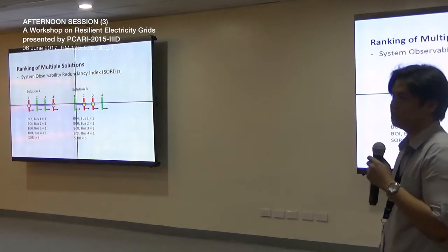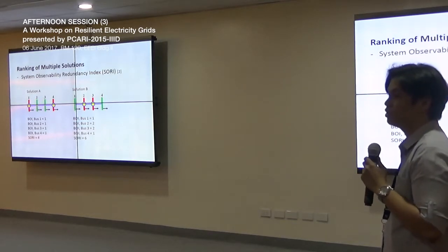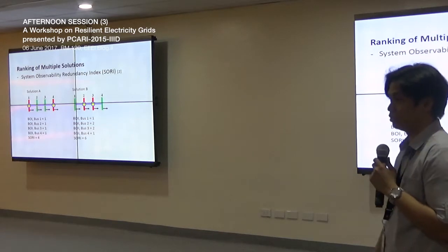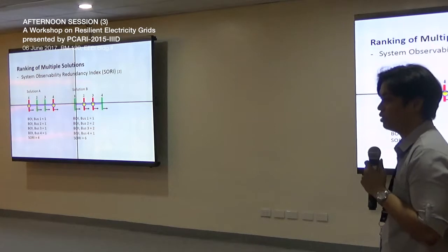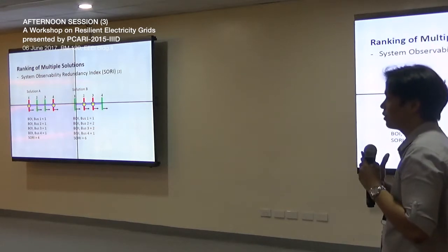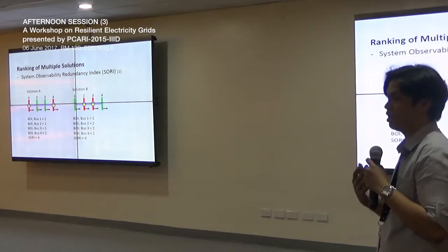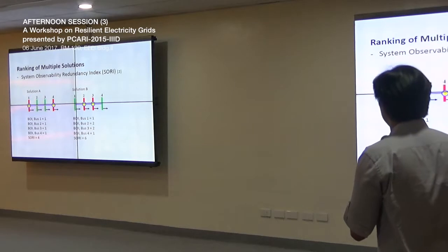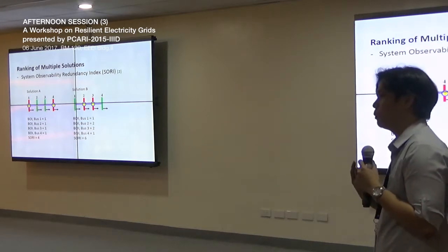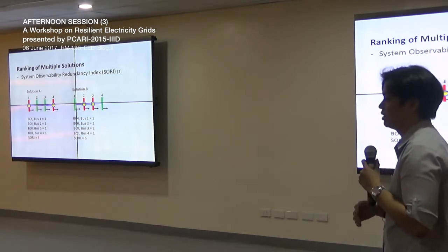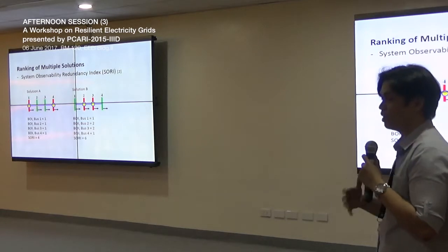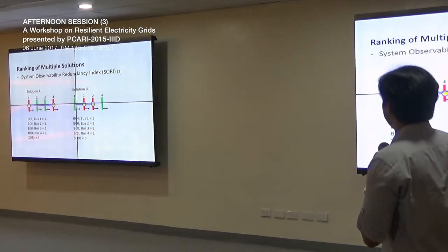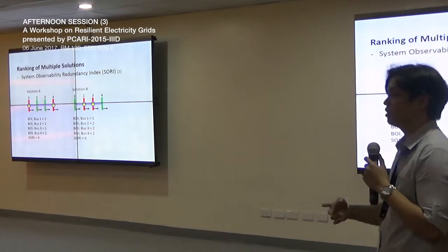In solving the optimal placement solutions, there may be cases where several solutions have the same minimum number of PMUs. We need a way to rank these solutions. One commonly used index is the System Observability Redundancy Index (SORI), which is the summation of all bus observabilities in the system — showing how many buses are repeatedly observable. For example, Solution A and Solution B may have the same number of PMUs and the same cost.